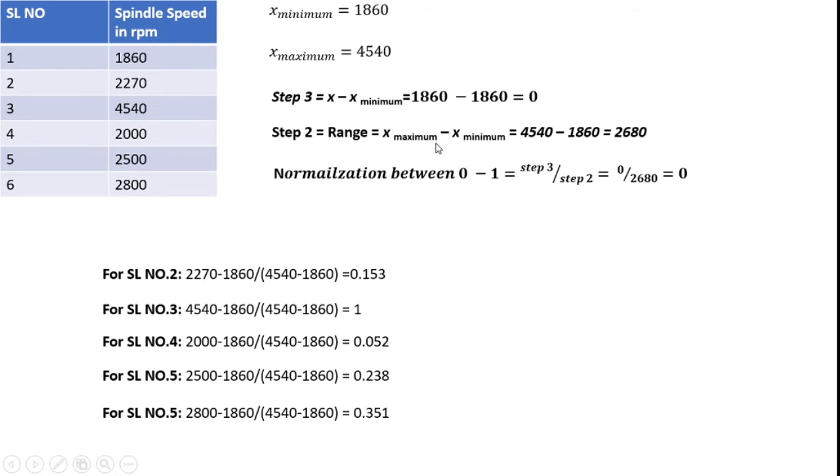Step 2: The range x_maximum minus x_minimum, which is maximum is 4540 available with the table. Minimum is 1860. So I subtract with each other, which is 2680. So I conduct the normalization with this data. I can get the value within 0 to 1, which means to normalize the data within the range of 0 to 1.